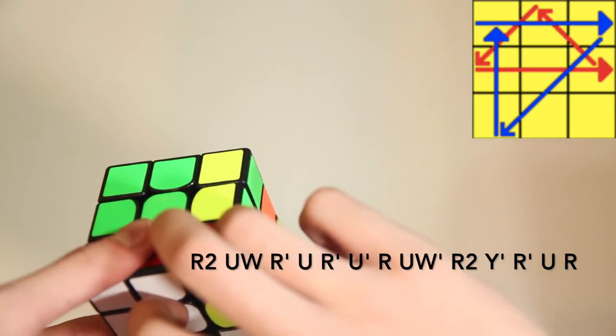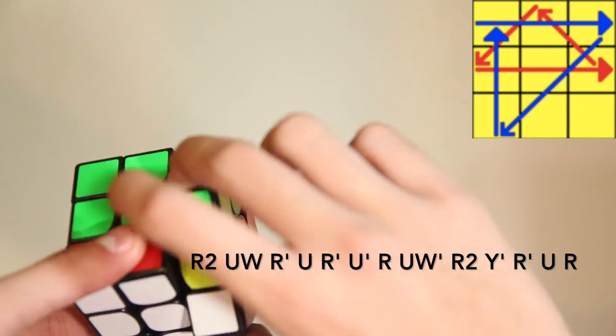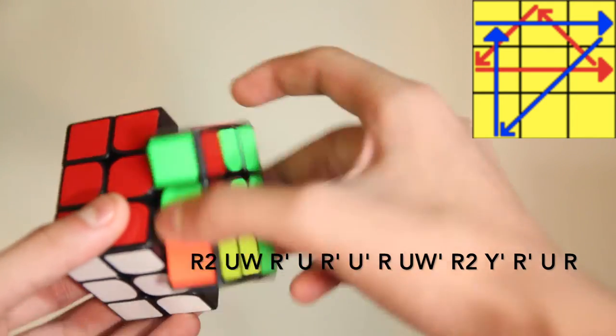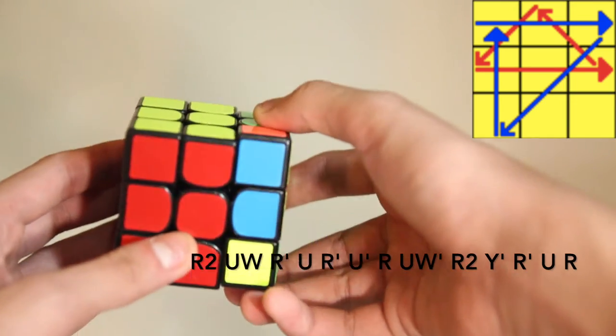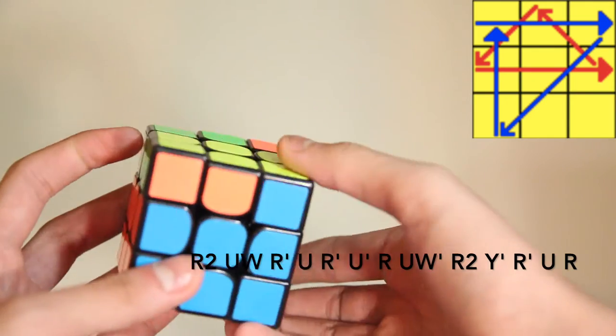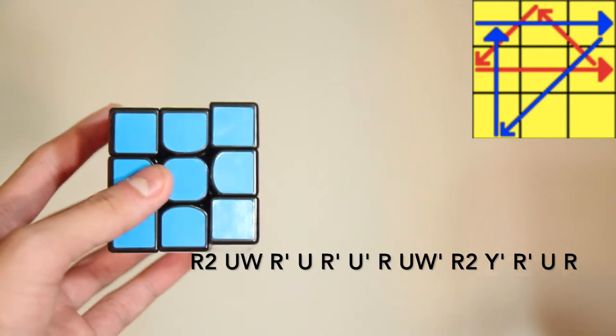U' with your left index finger. Like that. And then R, UW' with your left index finger and R2. Then you can do F' UF like this. Or you can rotate and do R' UR. Let's do that one more time.